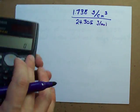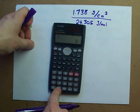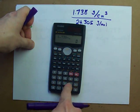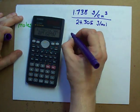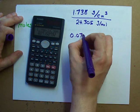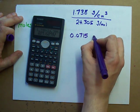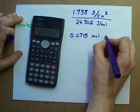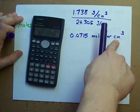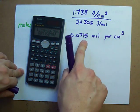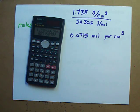And on my calculator, 1.738 divided by 24.305 gives 0.0715 moles. So every cubic centimeter of magnesium has this many moles in it.